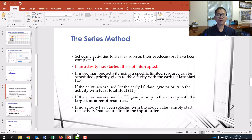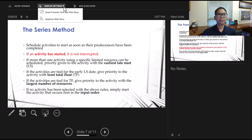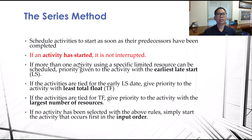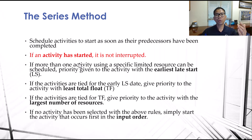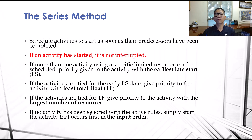The series method schedules activities to start as soon as their predecessors have been completed. If more than one activity uses a specific limited resource, priority is given to the earliest late start — whoever has the lowest late start gets higher priority. If both activities are ready to schedule and have the same late start, then we go to rule four: give priority to the activity with the least total float.